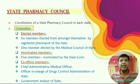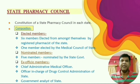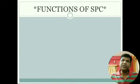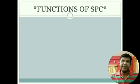The first ex officio member is the Chief Administrative Medical Officer of the State. Second is the Drug Controller of the State. Third is the Government Analyst of the State. If a state has only one Government Analyst, then that state will have only one Government Analyst as ex officio member.